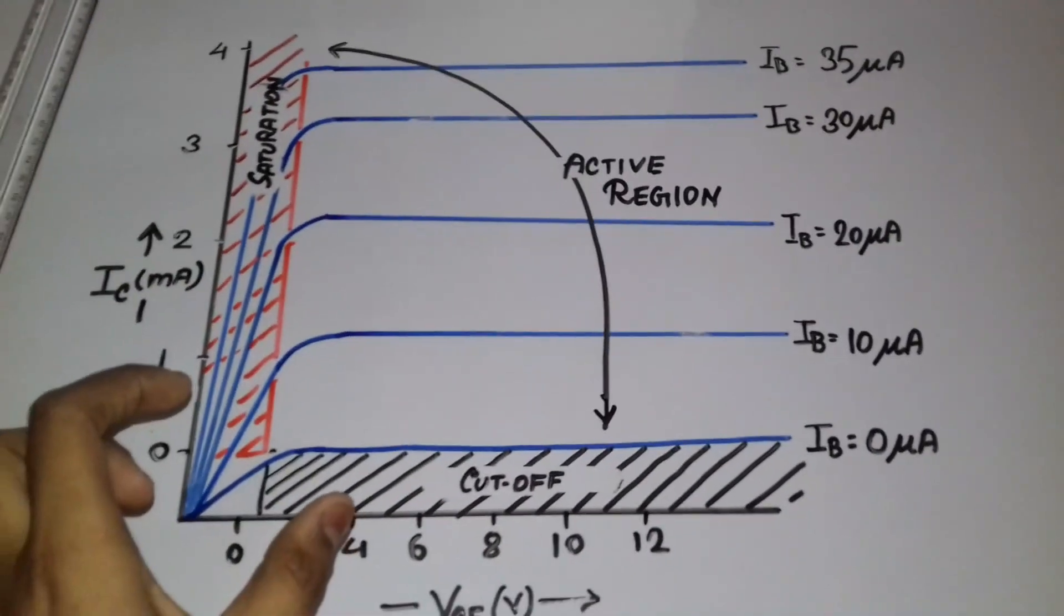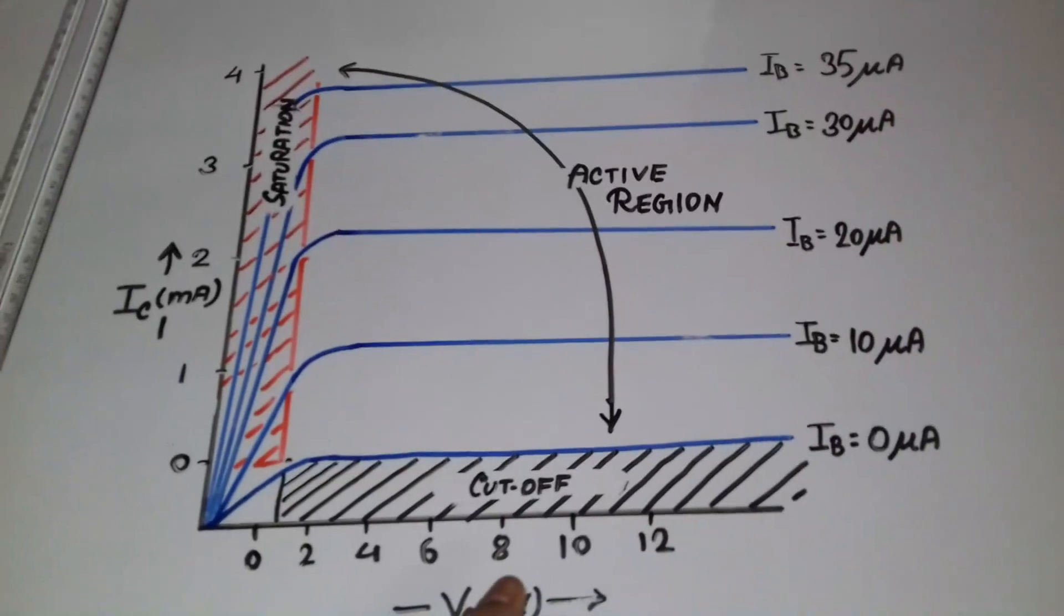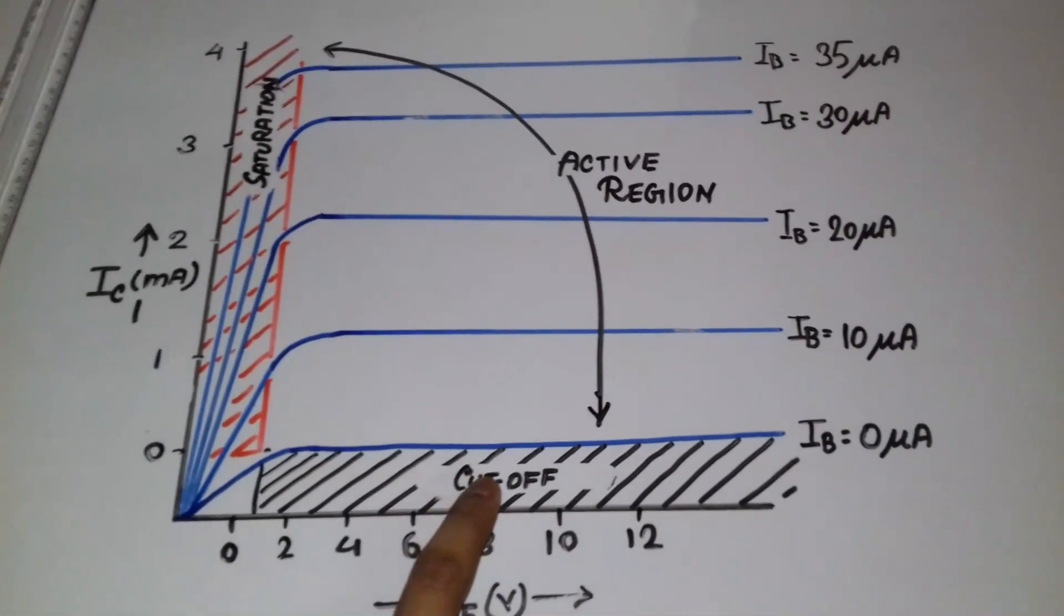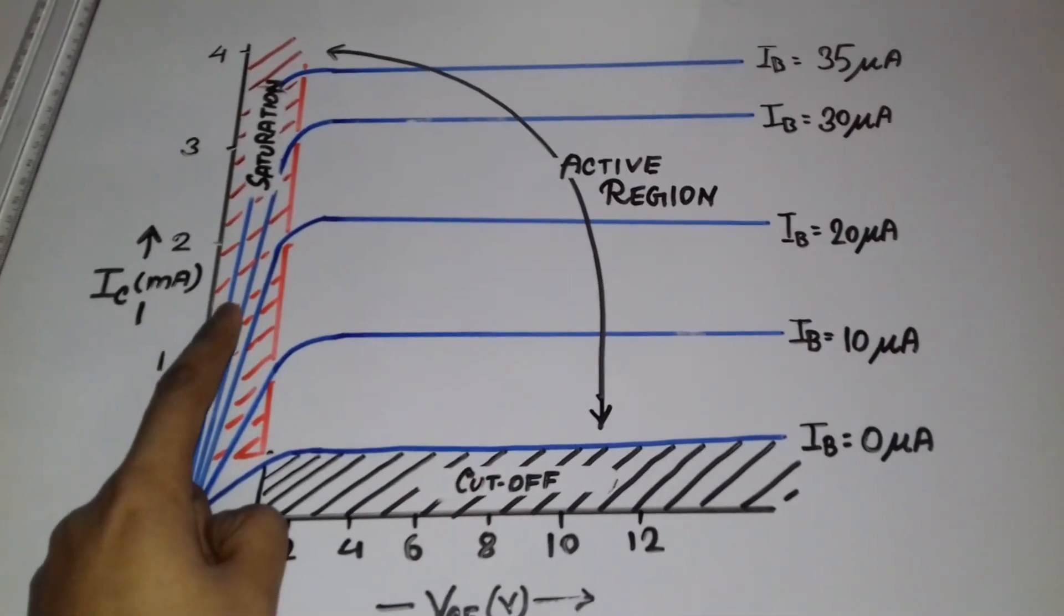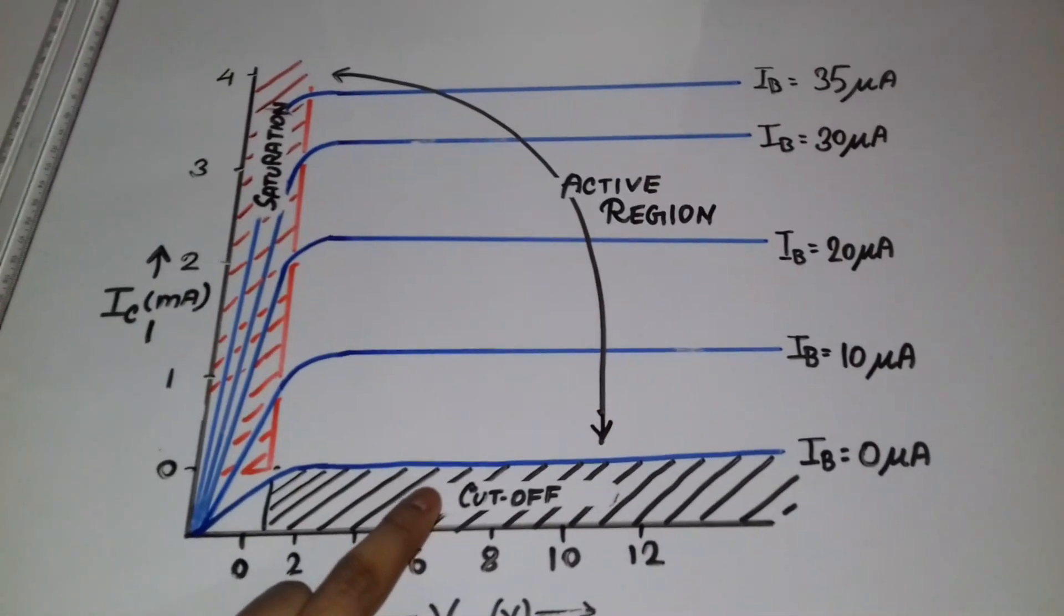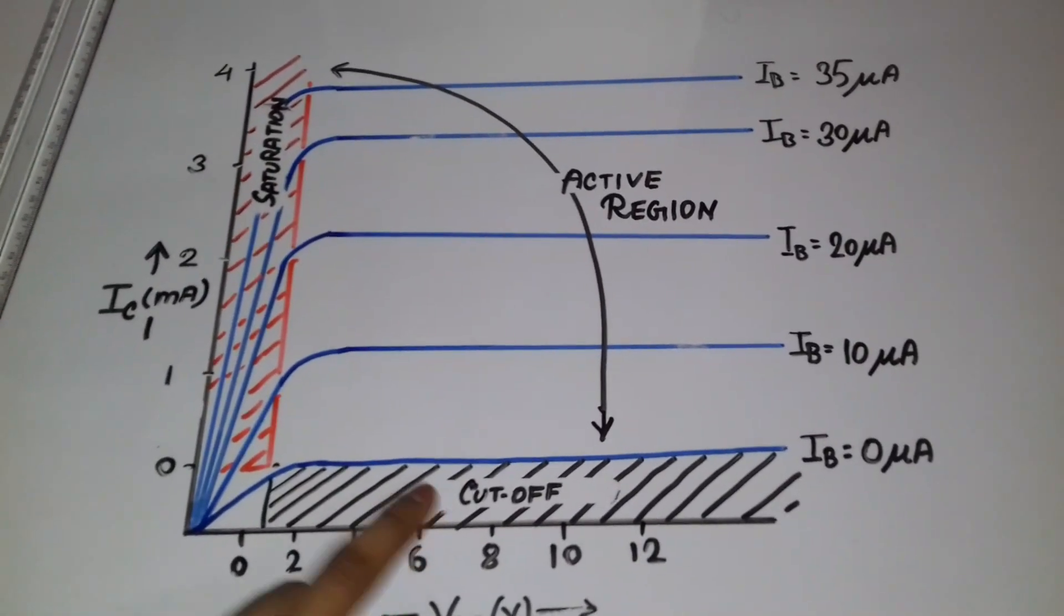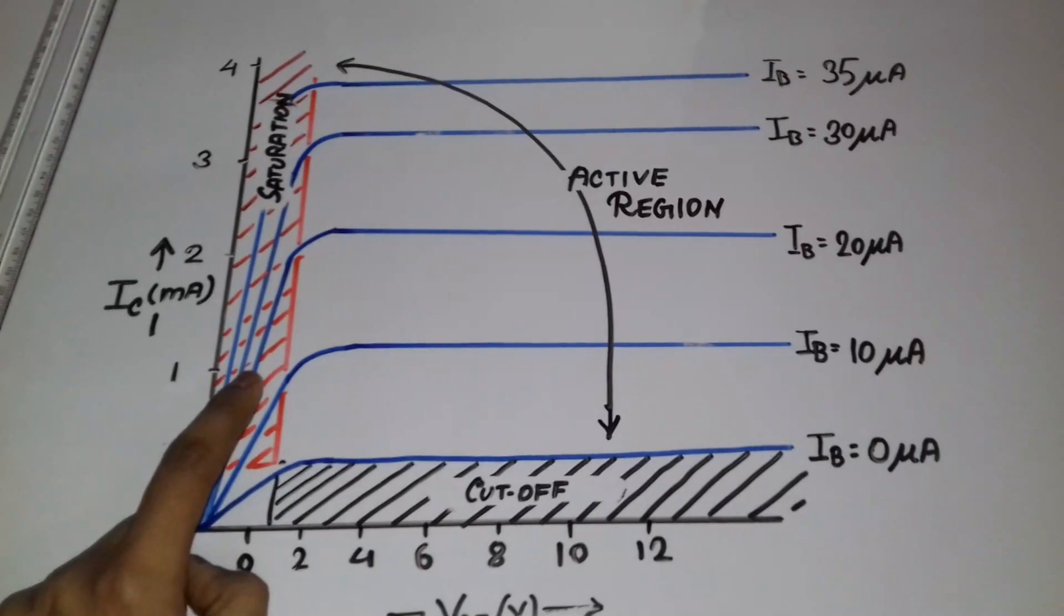So to make the transistor work as a switch, we have to operate the transistor in between these two regions - that is the saturation region and the cutoff region. Cutoff region to make the transistor off, and the saturation region to make the transistor on.